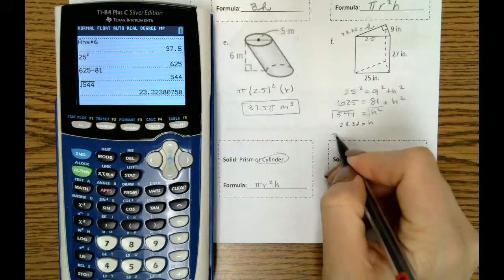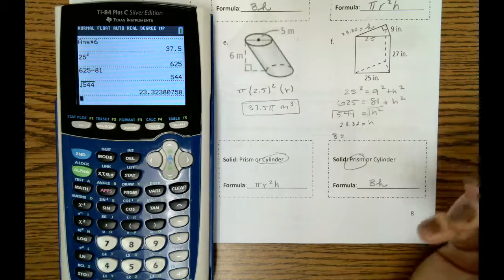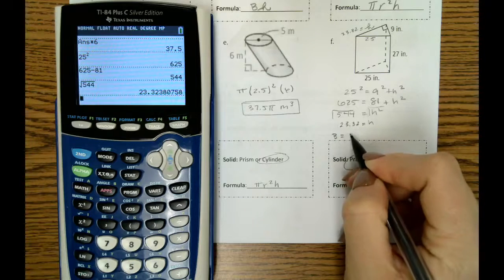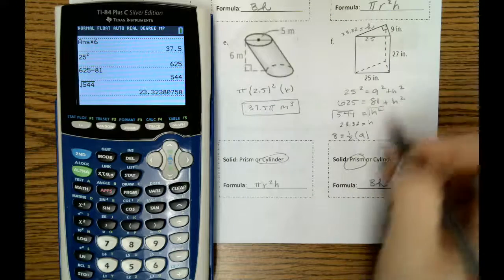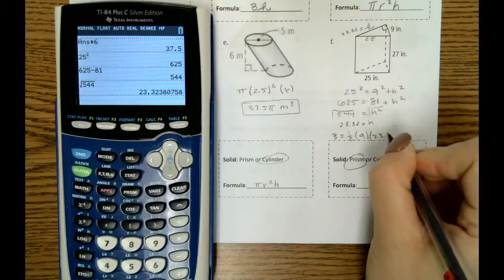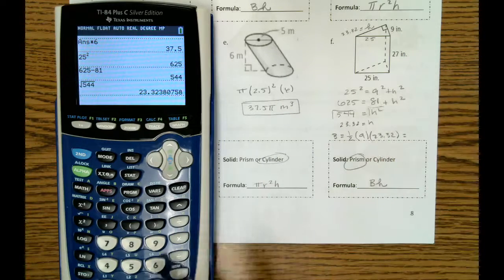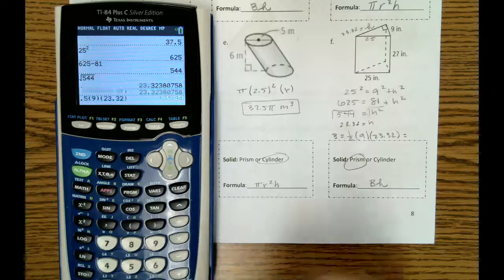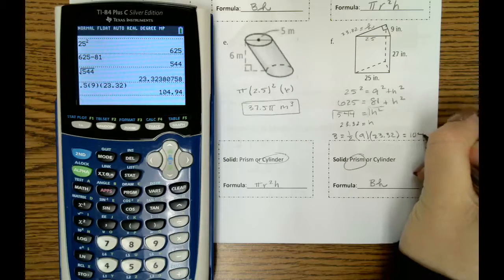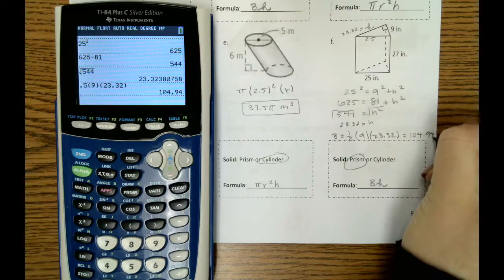All right, so now we can find the area of our base. So the area of our base is going to be one-half, the base of 9, times the height that we just found. Which is 104.94.